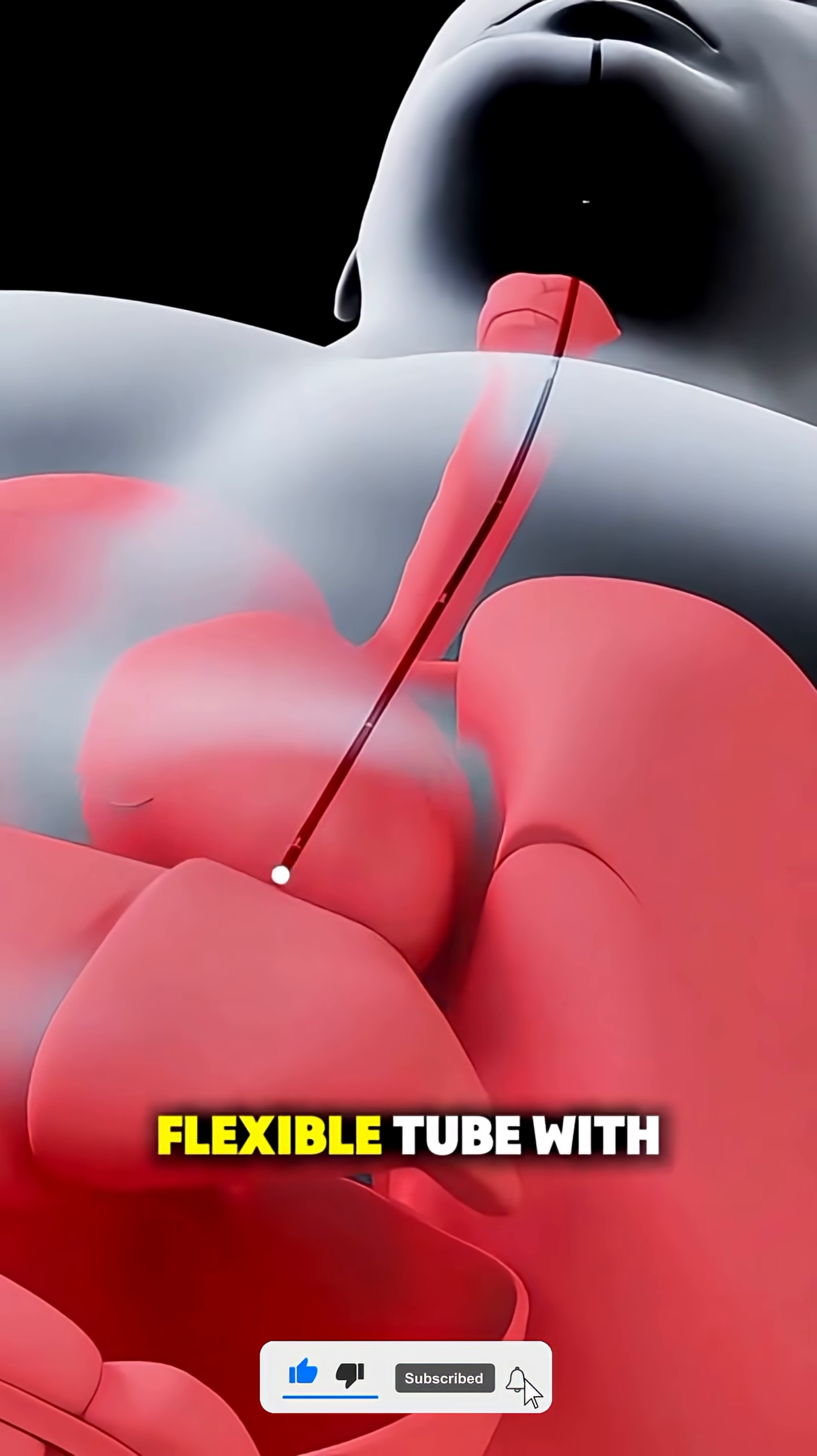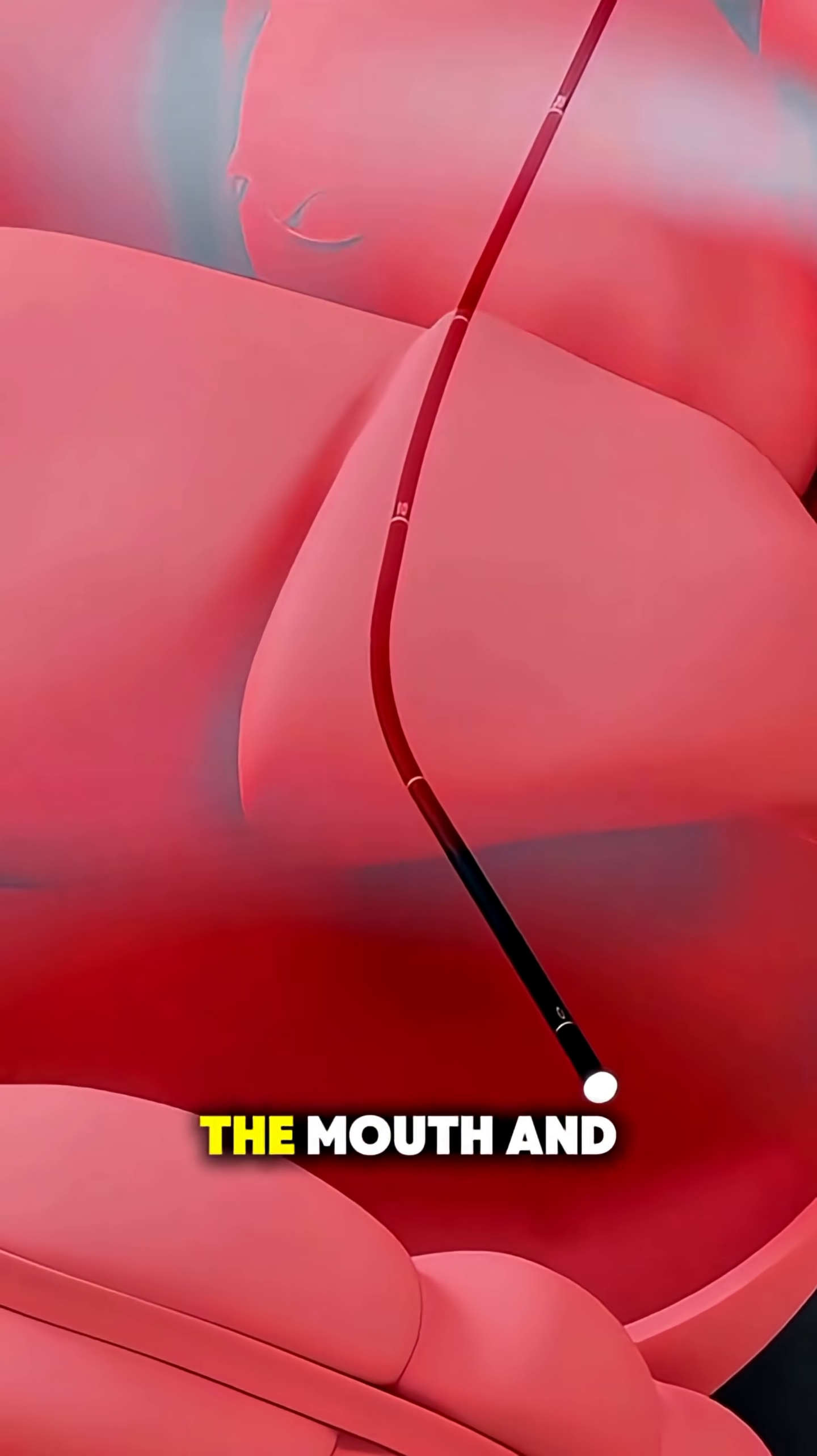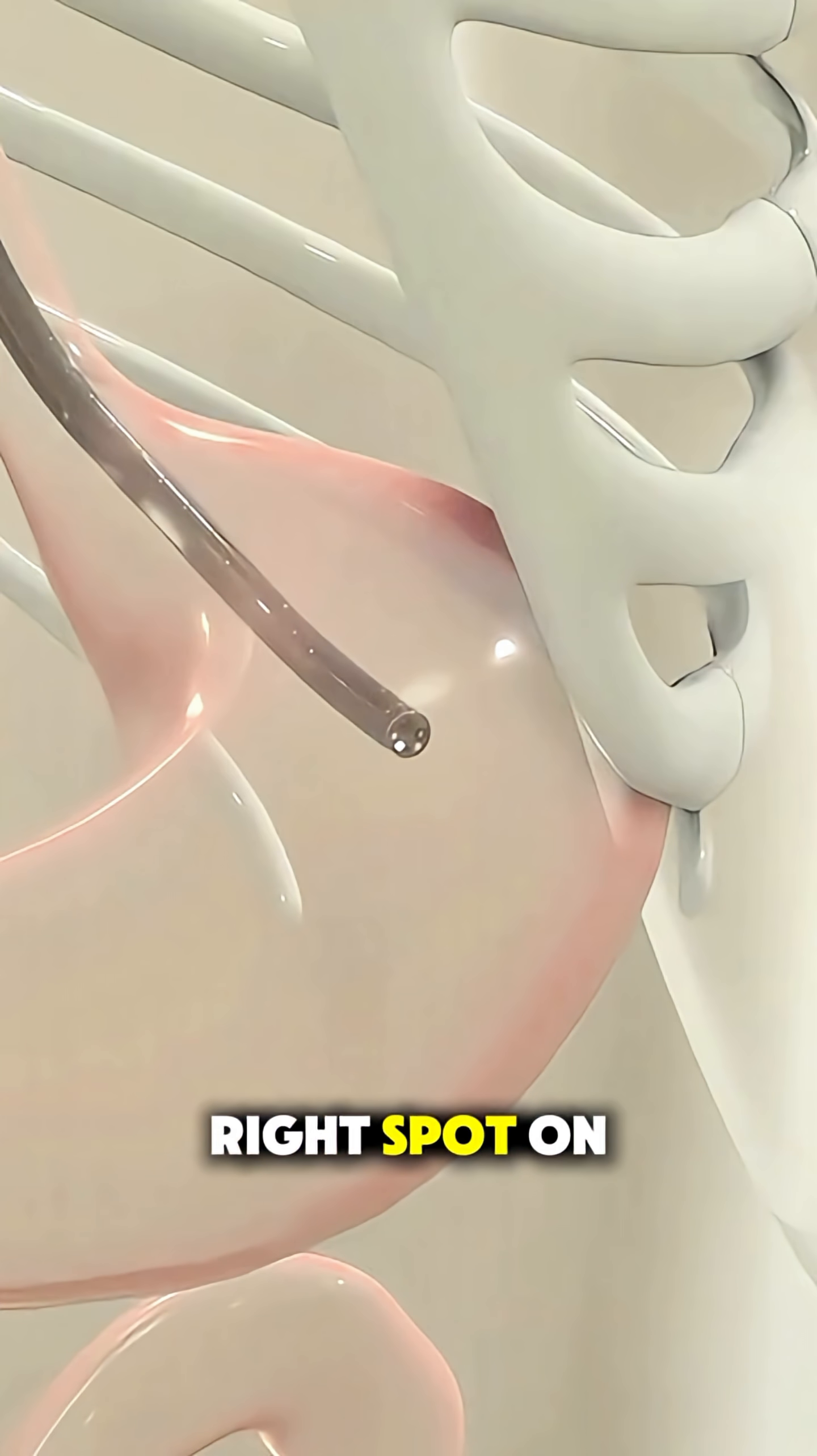Then, a thin flexible tube with a camera, called an endoscope, is passed through the mouth and down into the stomach. This helps the doctor see the inside clearly and find the right spot on the stomach wall.